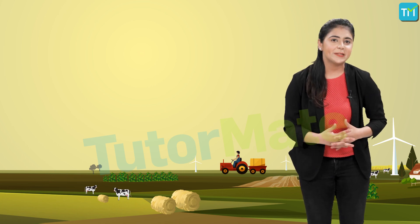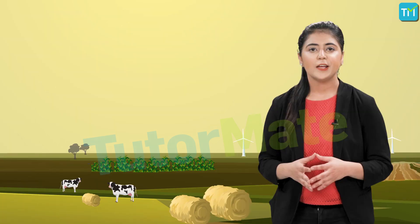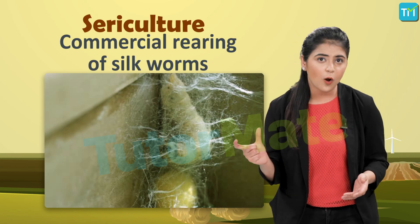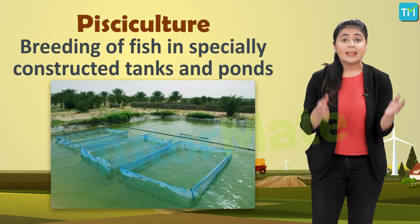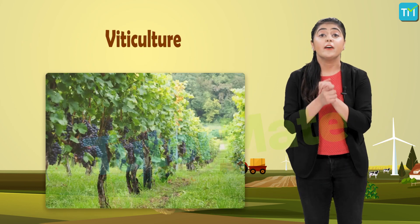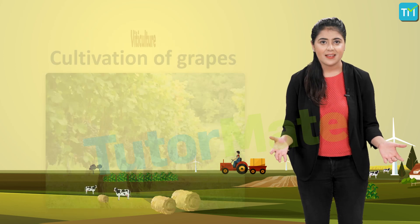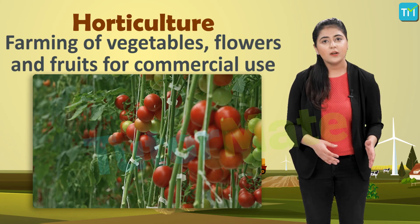Here are some other activities that fall under extraction and production of natural resources. Sericulture is the commercial rearing of silkworms, which may supplement the income of the farmer. Pisciculture is the breeding of fish in specially constructed tanks and ponds. Viticulture is the process of cultivation of grapes. Finally, horticulture is the farming of vegetables, flowers, and fruits for commercial use.